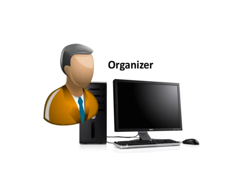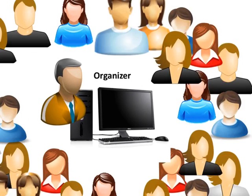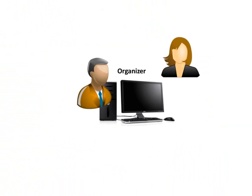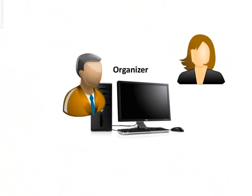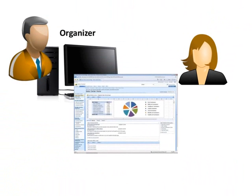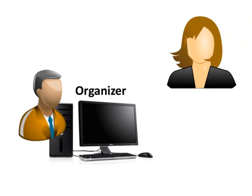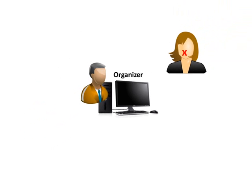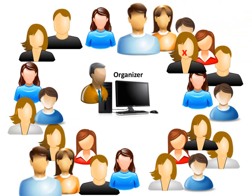With GoToMeeting, you can meet one or up to 25 students simultaneously. Students are able to view your computer's desktop and hear your voice. While sharing your desktop, you may also choose to let the student take control of your mouse. As an organizer, you have complete control of the meeting — you can mute or unmute any or all students, manage the chat string, and choose which students are viewed.